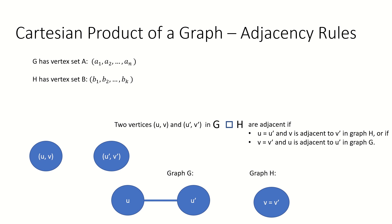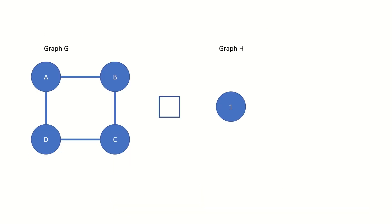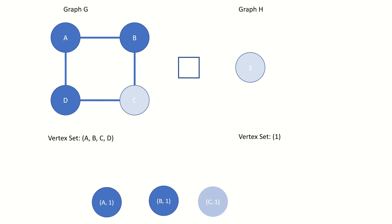To really understand what's going on, we'll need to work through some examples. Let's find the Cartesian product of a cycle graph of four vertices and a graph of a single vertex. For clarity, I have labeled the vertices of graph G with letters and the vertices of graph H with numbers. The first thing we need to do is determine the vertex set of the Cartesian product graph. The vertex set of graph G is {A, B, C, D} and the vertex set of graph H is {1}. Their Cartesian product gives us {A1, B1, C1, D1} as the vertices of the Cartesian product graph.